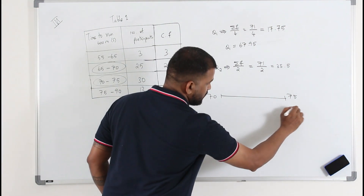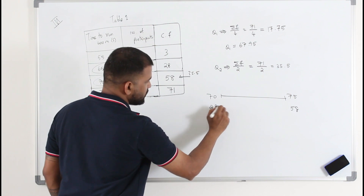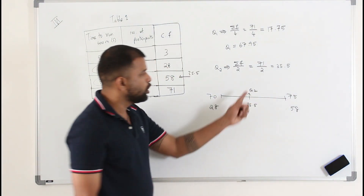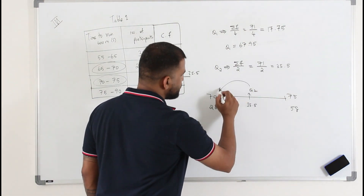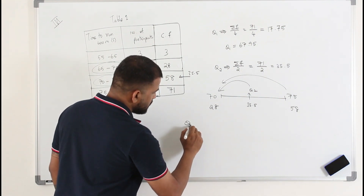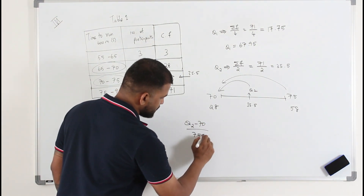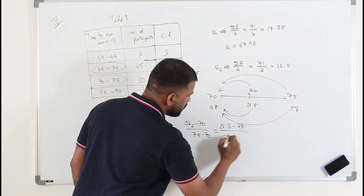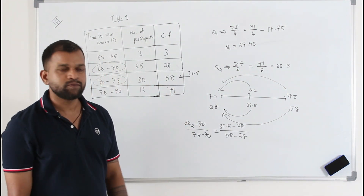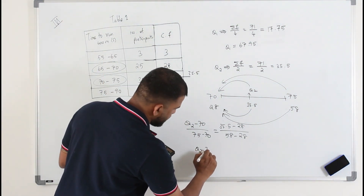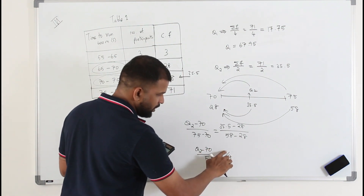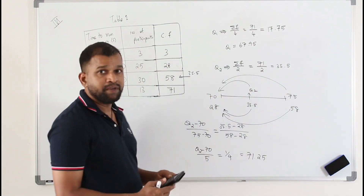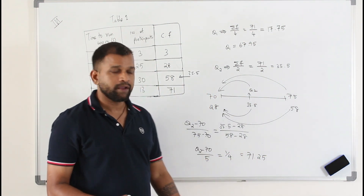Take the corresponding cumulative frequency (58) and the previous cumulative frequency (28). Your value 35.5 is somewhere in between, and the corresponding x-value is Q2. Apply linear interpolation: (Q2 − 70) / (75 − 70) = (35.5 − 28) / (58 − 28). So Q2 − 70 over 5 = 7.5 over 30, which simplifies to 1 over 4. Bring the 5 over: Q2 = 5/4 + 70 = 71.25.